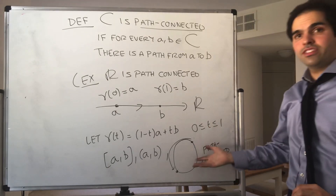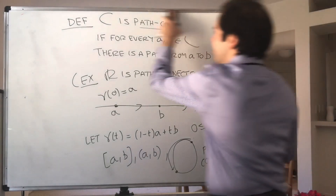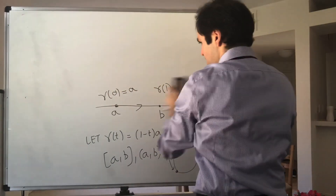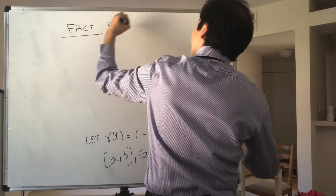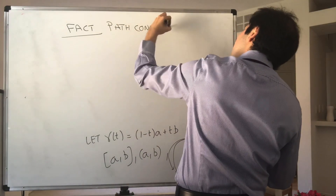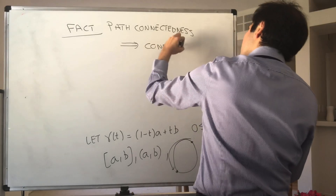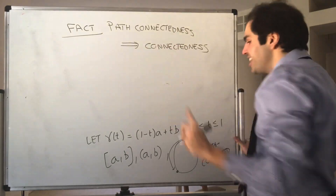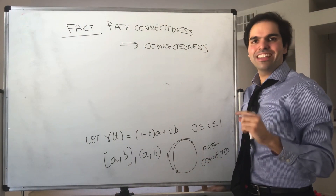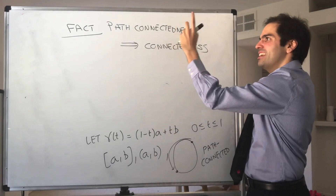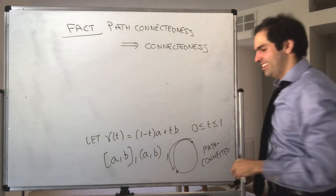Why are path connected sets nice? Well, in fact, path connectedness implies connectedness. However, careful — just a technical remark: do not use this to show that the interval is connected, because it turns out the fact that the interval is connected is actually used in the proof. So just be aware.